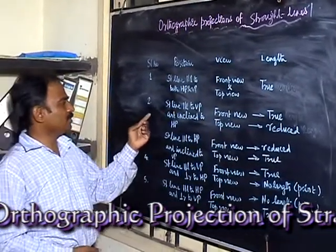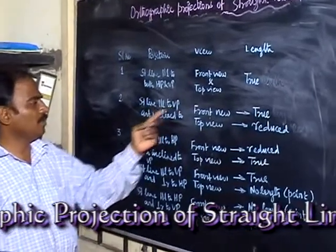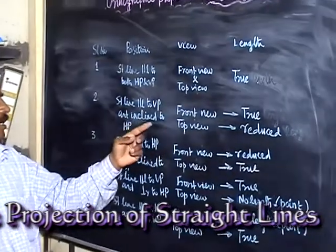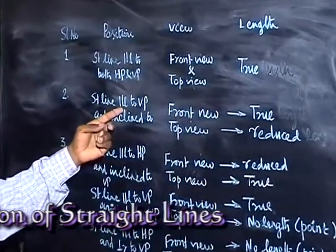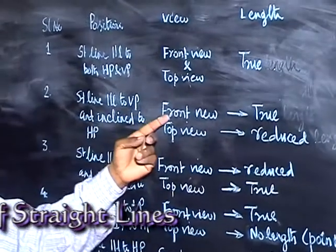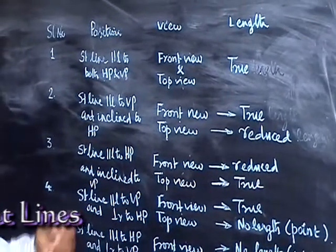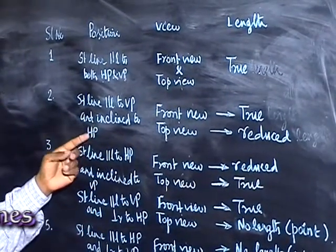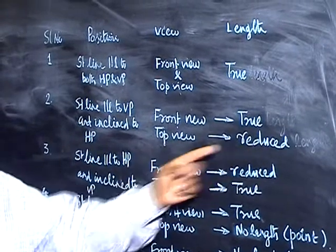In the second position, the straight line is parallel to VP and inclined to HP. Since it is parallel to VP, the front view will give the true length. Since it is inclined to HP, in the top view you will get a reduced length.